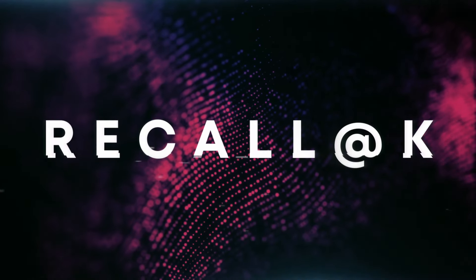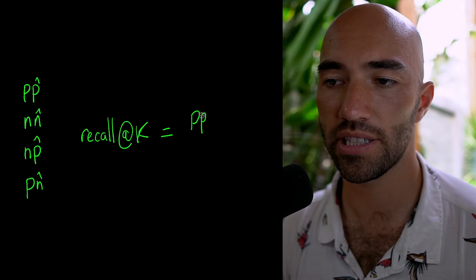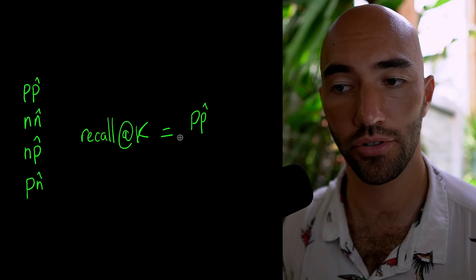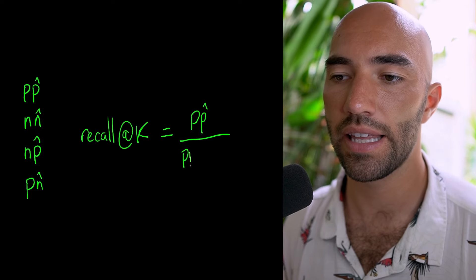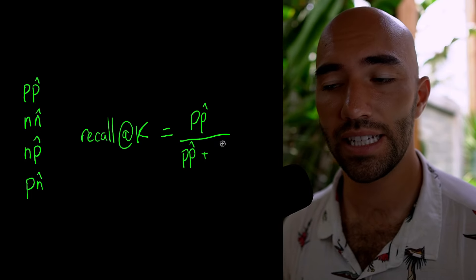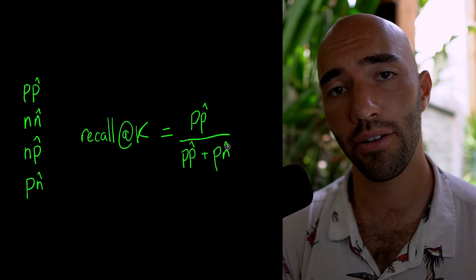Let's see how these outcomes are used to calculate context recall and context precision. Context recall is more broadly referred to as recall at k. Recall at k calculates how many of the total relevant records within a dataset have been returned by our pipeline. We calculate it as true positives divided by total relevant contexts, which equals true positives plus false negatives (P/N-hat).